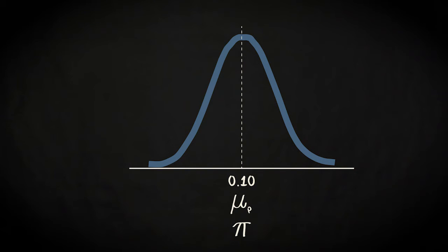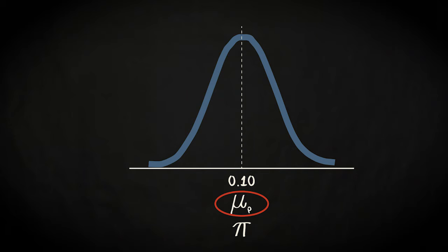To show that we are dealing with the mean of a sampling distribution, the mean is symbolized by mu p. We add the p to indicate the sampling distribution of the sample proportion, in which the scores are not scores of individuals, but sample proportions. As you can see, the exact same logic applies as in the case of the sampling distribution of the sample mean.